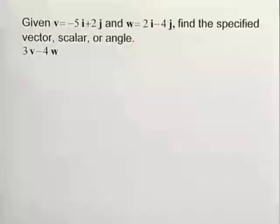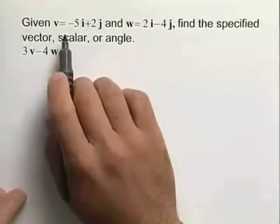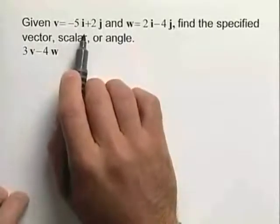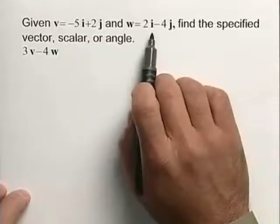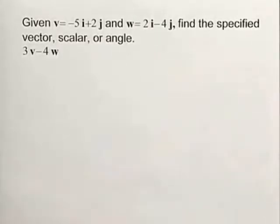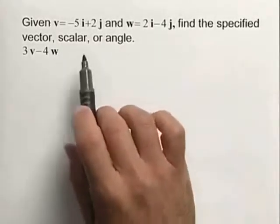Consider the following example. We're given the vector v, which is equal to negative 5i plus 2j, and the vector w, which is equal to 2i minus 4j. We want to find the specified vector, scalar, or angle.